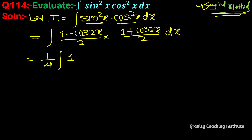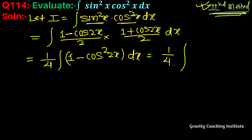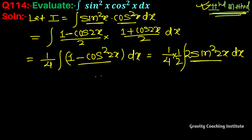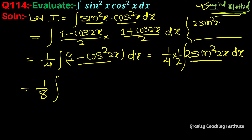We multiply out to get one by four into integration of (1 minus cos²2x) dx, which can be written as one by four into integration of sin²2x dx. Taking a factor of 2, balanced by one by two, and using the identity 2sin²2x equals 1 minus cos 4x, the expression becomes one by eight into integration of (1 minus cos 4x) dx.